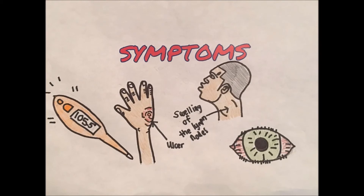The symptoms of Tularemia vary depending on the form that has been contracted. Oculoglandular Tularemia symptoms include eye pain, eye redness, eye swelling and discharge, an ulcer on the inside of the eyelid, and sensitivity to light. Ulceroglandular and glandular Tularemia have very similar symptoms which include fever, chills, headache, exhaustion, skin ulcers at the infection site, and swollen and painful lymph nodes. Oropharyngeal Tularemia symptoms include fever, throat pain, mouth ulcers, vomiting, diarrhea, inflamed tonsils, and swollen lymph nodes.